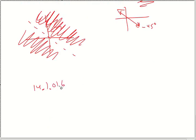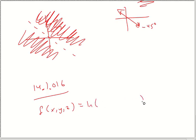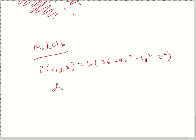14.1.016. They're wanting to sketch the domain again, but now it's three-dimensional — technically four-dimensional, but you've got three independent dimensions. You've got ln of 36 minus 9x squared minus 4y squared minus z squared. We've already seen this — take the inside equal to zero and start working the math. Just like last time, it looks like it might be an ellipse of some kind, so move everything over and divide by 36.